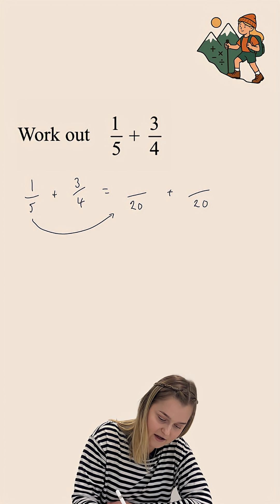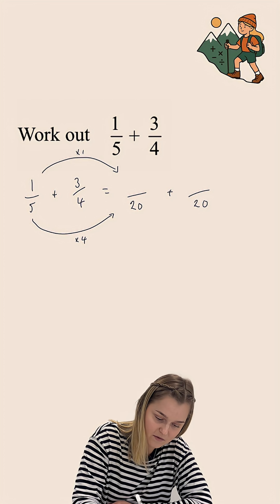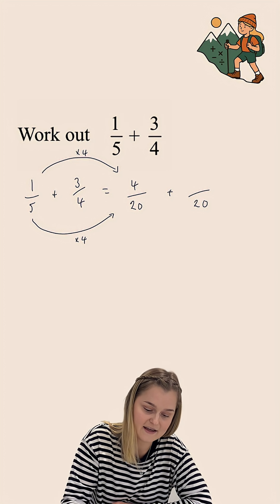Now, in order to get from 5 to 20, we have multiplied by 4. And so, we are going to do exactly the same with the numerator of that fraction. 1 multiplied by 4 gives us 4.